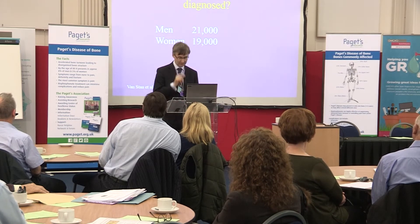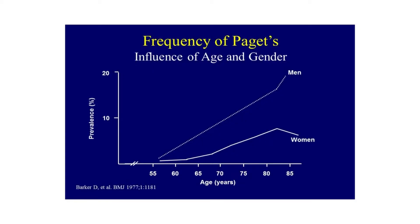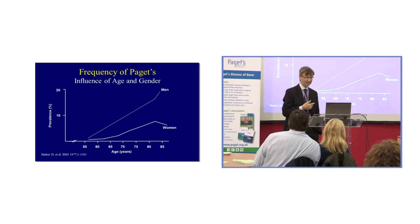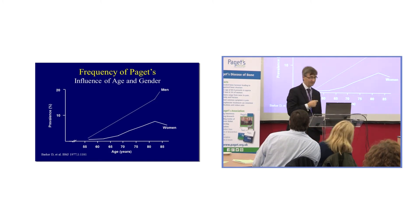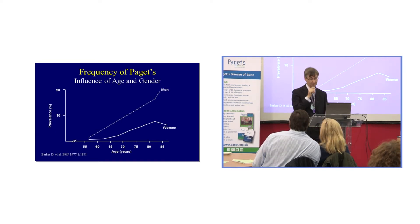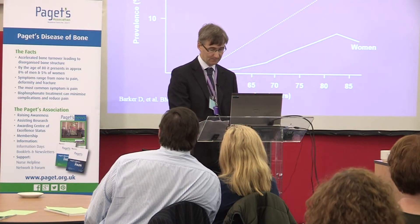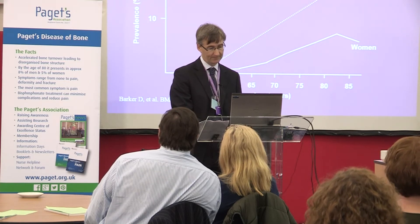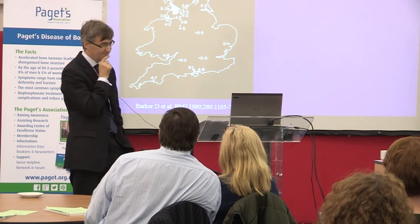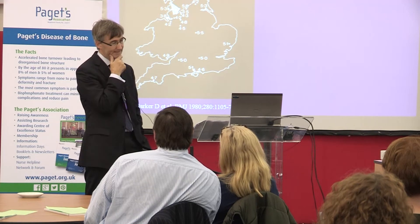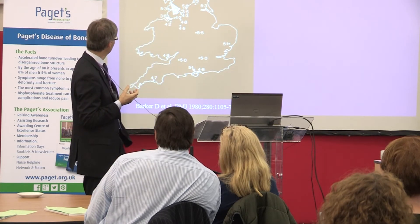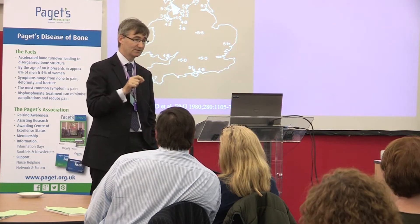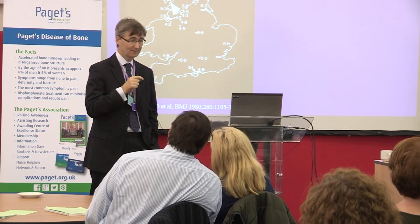Looking at the distribution in different people and different places — data from a large survey shows that from the age of 55 the disease increases in frequency with age in both men and women, though at all ages it is greater in men than in women. A series of surveys in the 1970s by David Barker and David Geyer looked at over 30 hospitals across the UK including England, Wales and Scotland, and found variation in the occurrence of the disease.